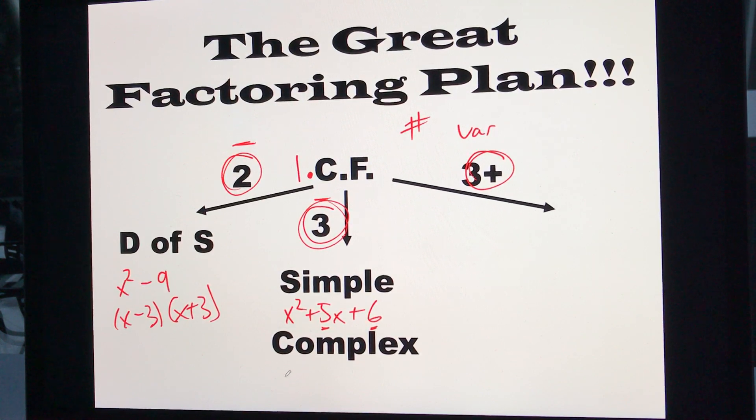If it was complex, we had a number out front. So say it was 3x squared plus 7x plus 10. I would find two numbers that add to 7 and multiply to 3 times 10, which is 30.